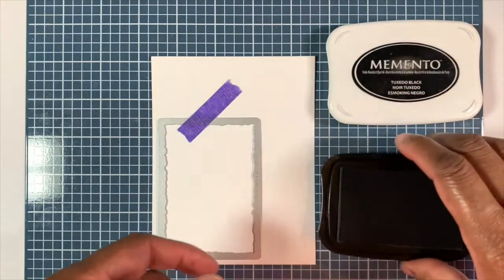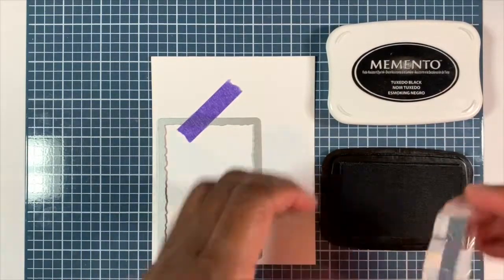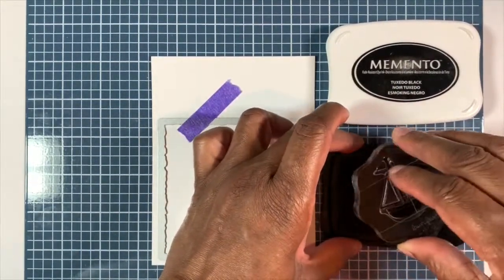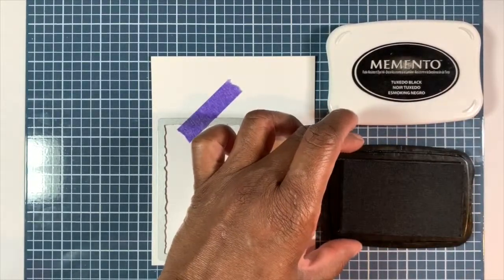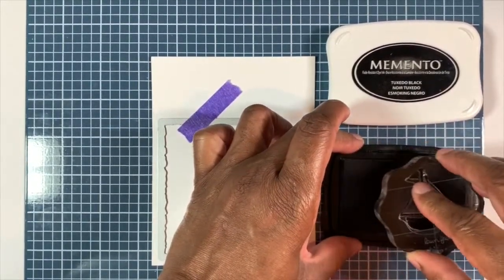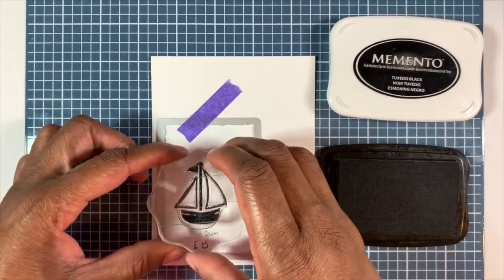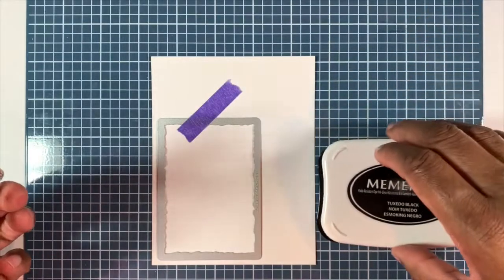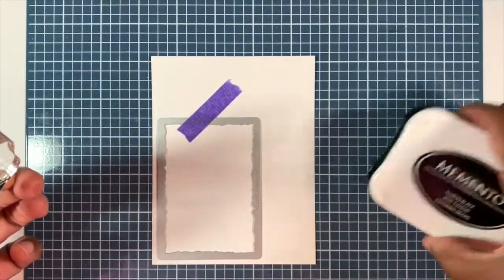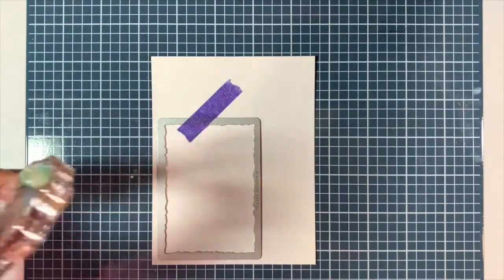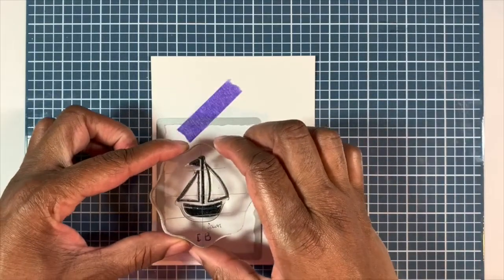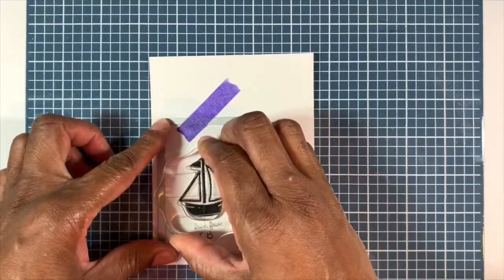So what I'm doing now is taking the smaller thinlet of the two that I'm using for this project. I'm just taping it down on my top layer here. I'm doing that just so I have a sense of where I want to stamp the sailboat. That's going to be my focal point. And so I want to make sure it's centered and in an area so I can do my stenciling.